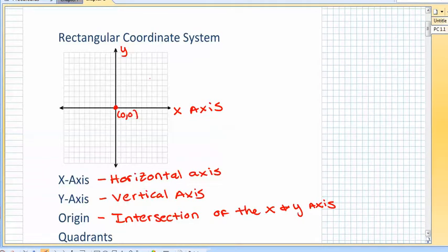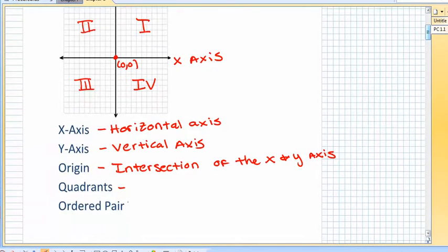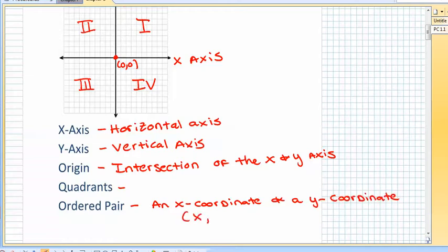There are four quadrants and they go counterclockwise. The first quadrant there, the second quadrant there, third and fourth counterclockwise. In each quadrant or each point that you graph is what's called an ordered pair. So an ordered pair basically tells you where to put the point. It consists of an x-coordinate and a y-coordinate.